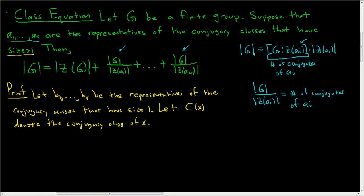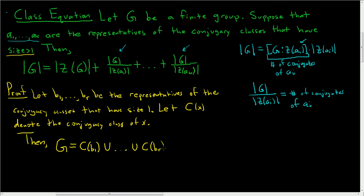Because conjugacy classes are equivalence classes, we can write G as a disjoint union of its conjugacy classes. So G equals the conjugacy class of B sub 1 union dot dot dot union the conjugacy class of B sub R, union the conjugacy class of A sub 1 union dot dot dot union the conjugacy class of A sub K.